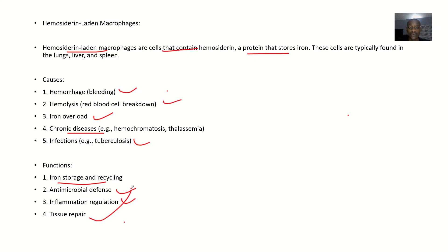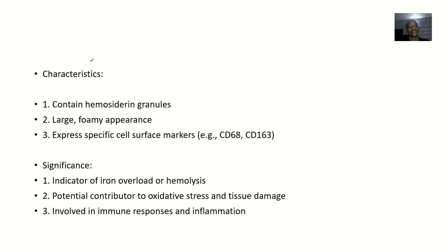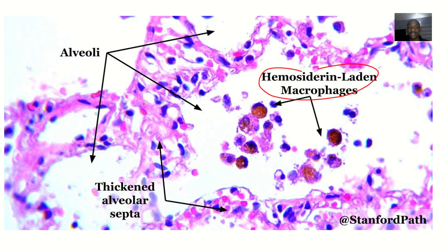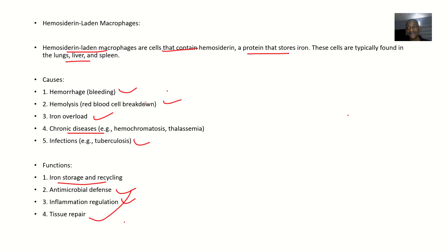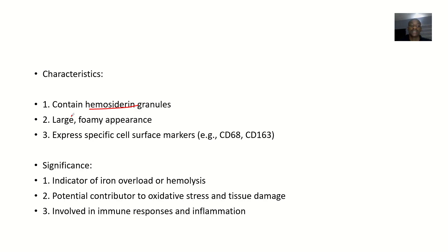We've already spoken about where these cells could be found — lungs, liver, spleen. As for characteristics, they contain hemosiderin granules, hence the name hemosiderin-laden. They are large with a large and foamy appearance. They express specific cell surface markers like CD68 and CD163.